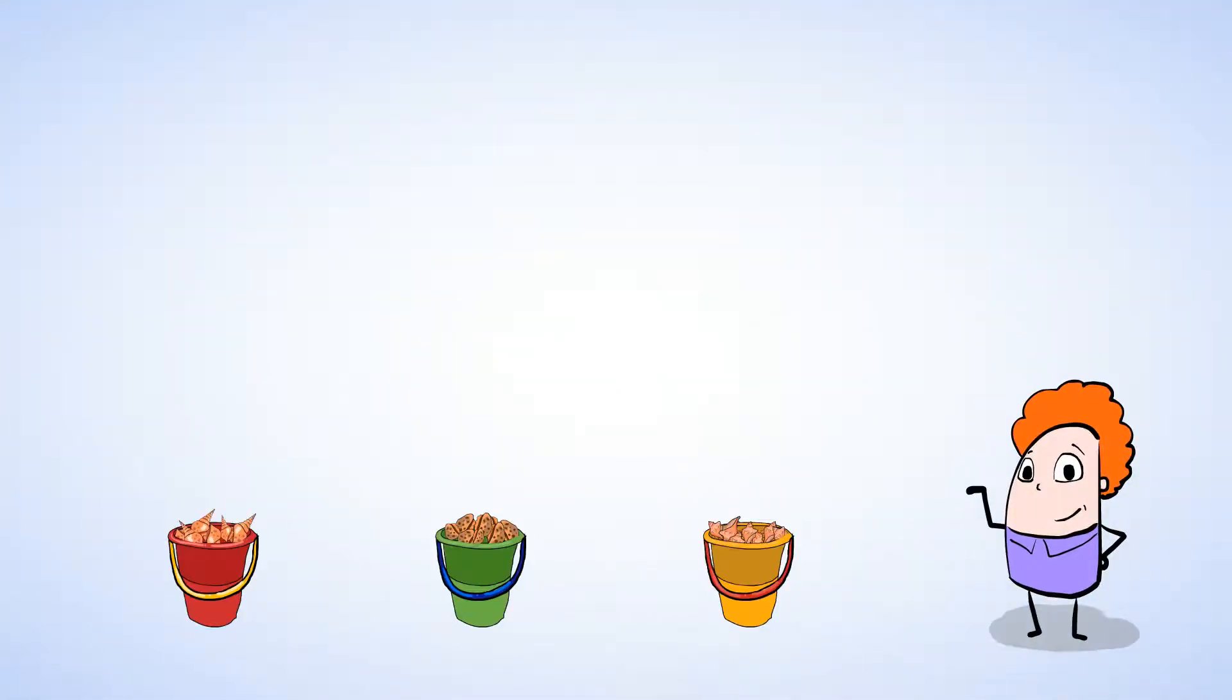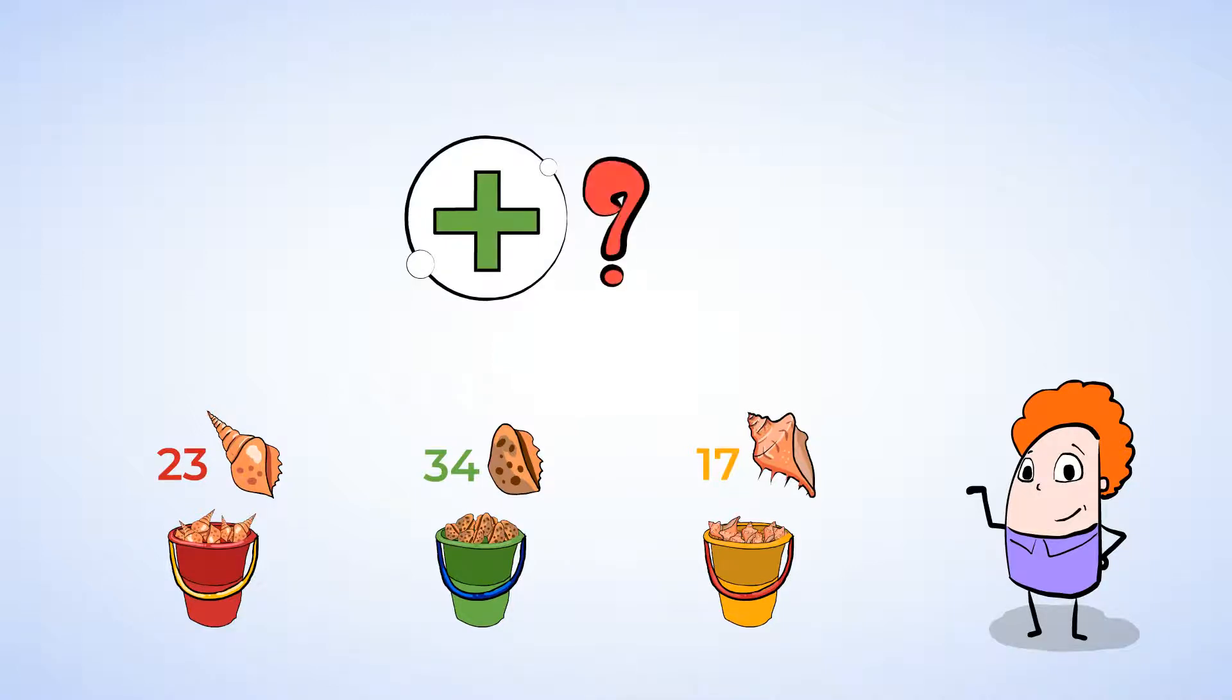The red bucket has 23 shells, the green bucket has 34 shells, and the yellow bucket has 17 shells. We can add them all up to figure out how many shells we have in all.